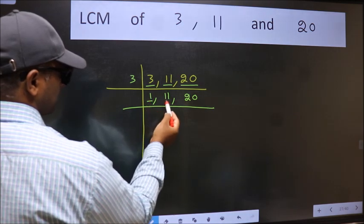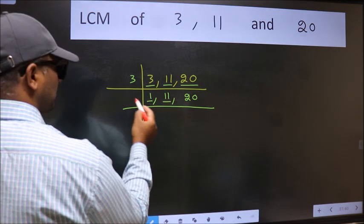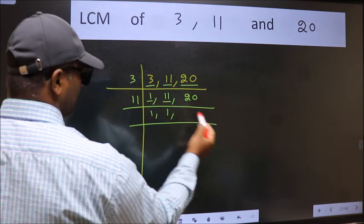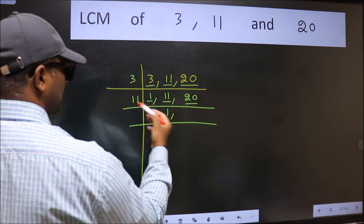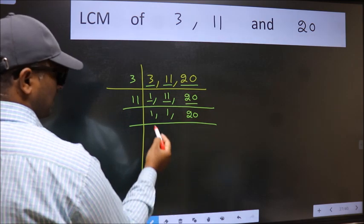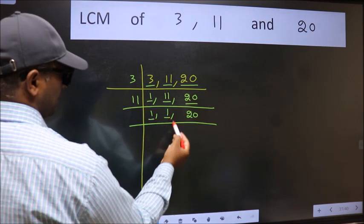So focus on the next number 11. 11 is a prime number so 11 wants 11. The other number 20 not divisible by 11 so we write it down as it is. Now we got 1 here and here.